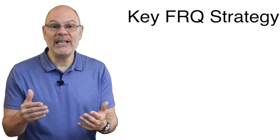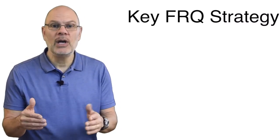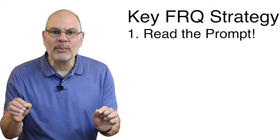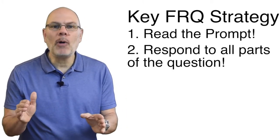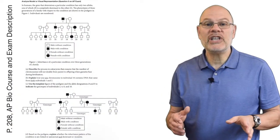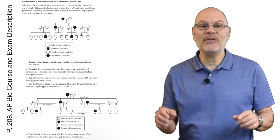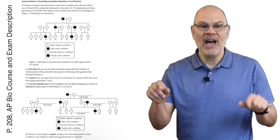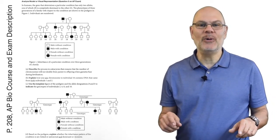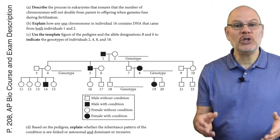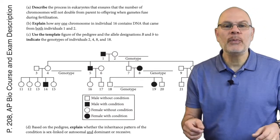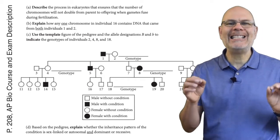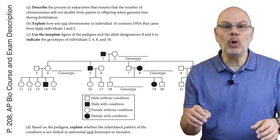At this point in the year, you've probably responded to many FRQs, but I'm going to start with an obvious point: read the prompt and respond to all parts of the question. Here's an example from page 208 of the College Board's Course and Exam Description for AP Bio — I've put a link to that document below. The College Board has made it very easy by putting what they call task verbs in bold text. These task verbs tell you what to do.